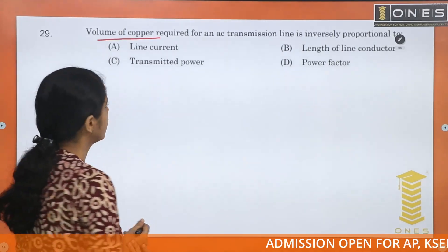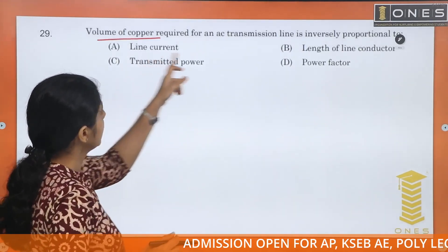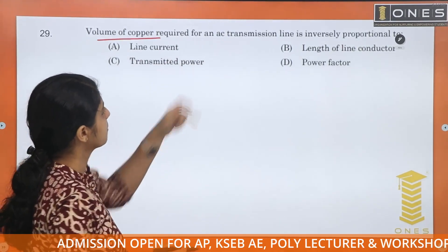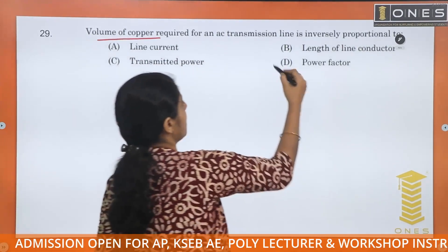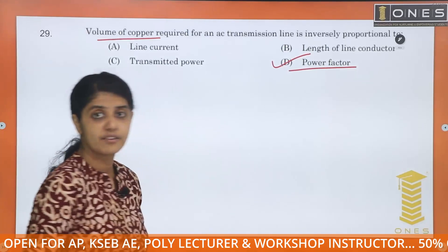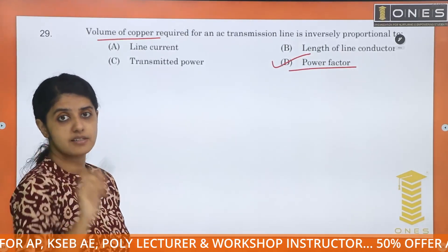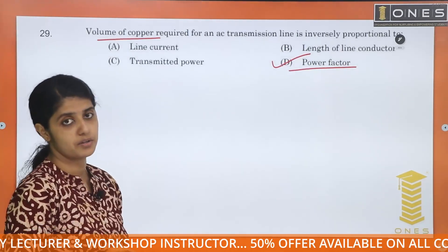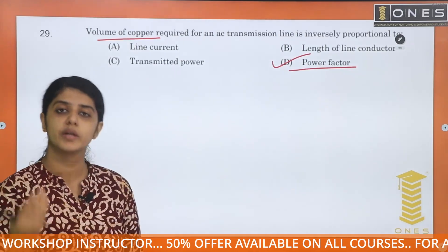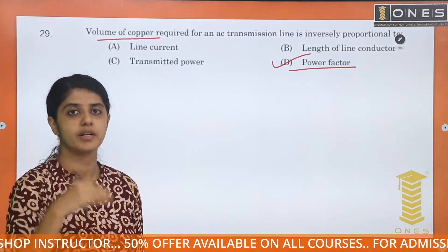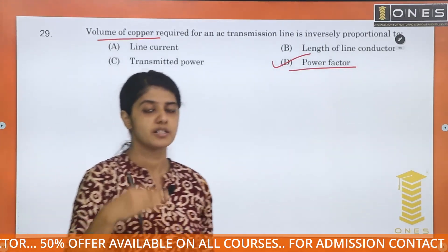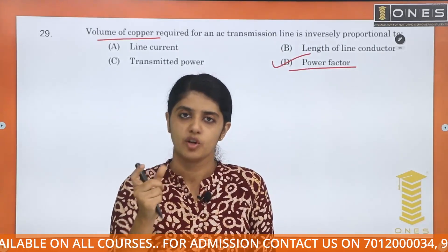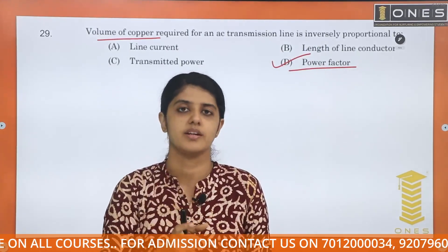The volume of copper is inversely proportional to the power factor. When the power factor increases, the volume of conductor required is reduced. We can improve the power factor to reduce the volume of conductor needed.